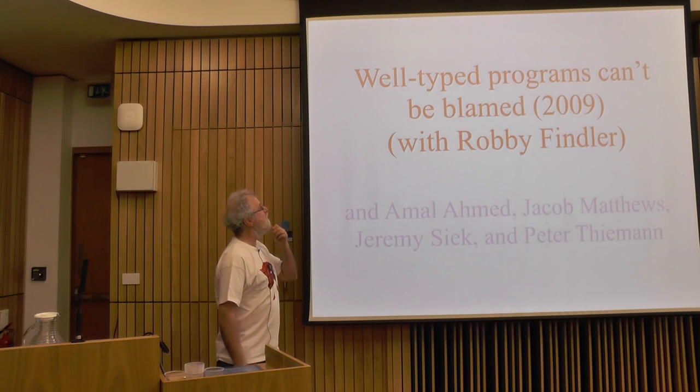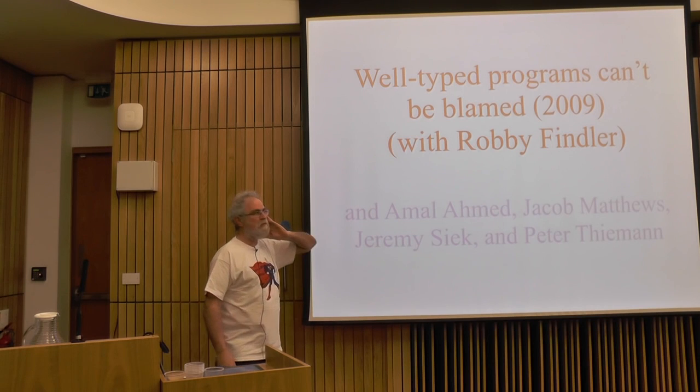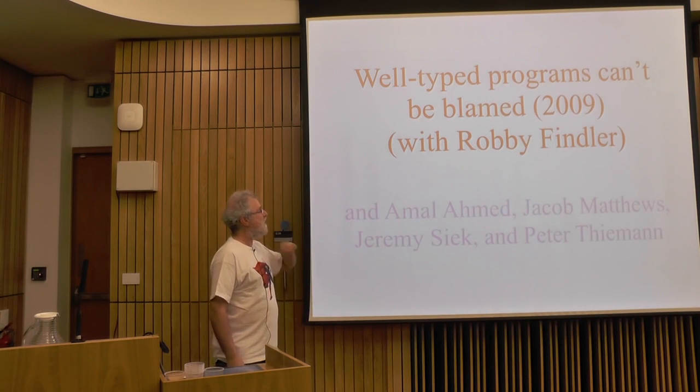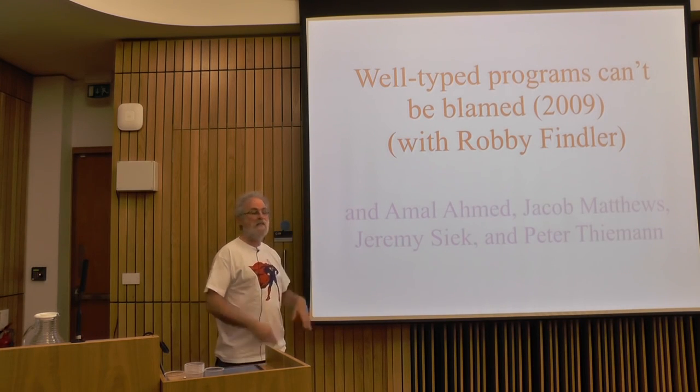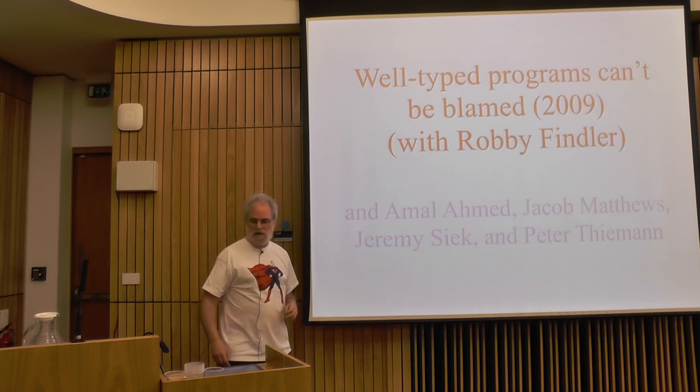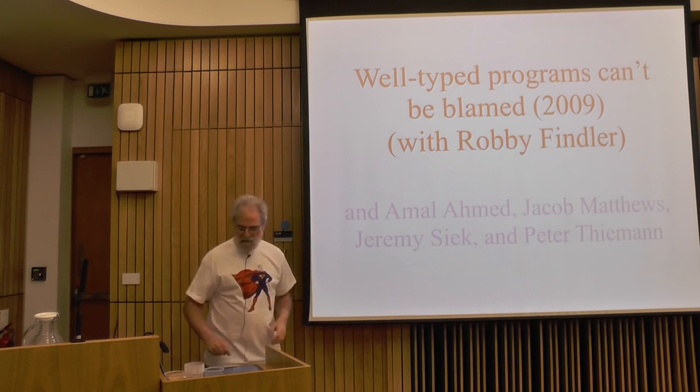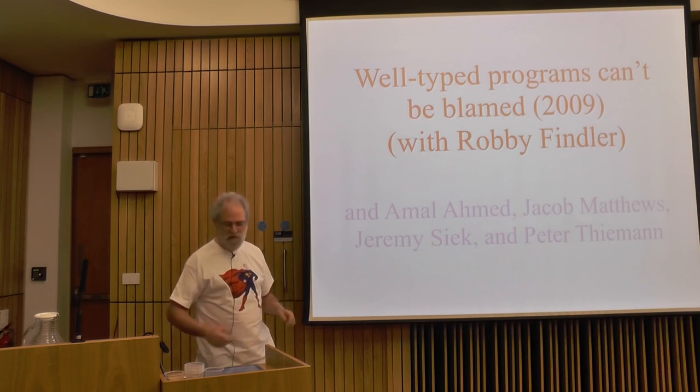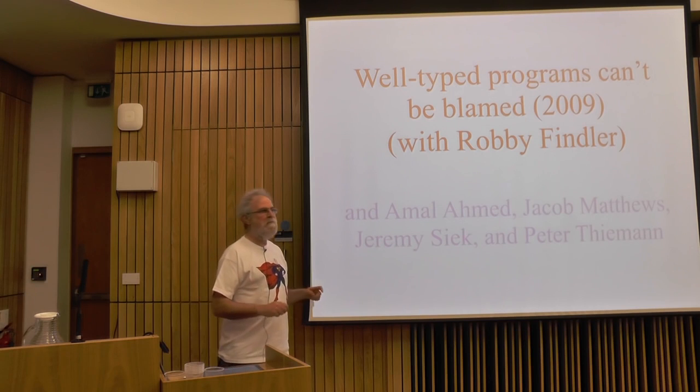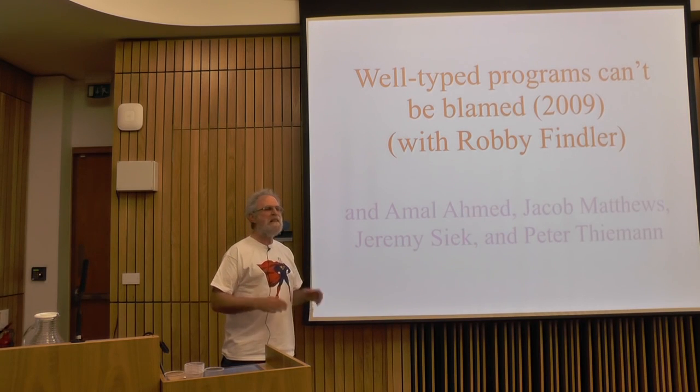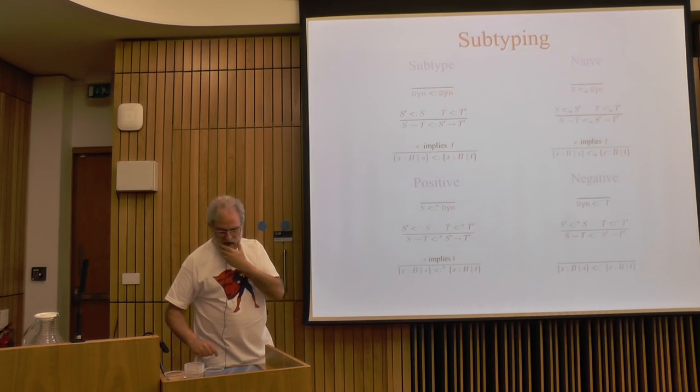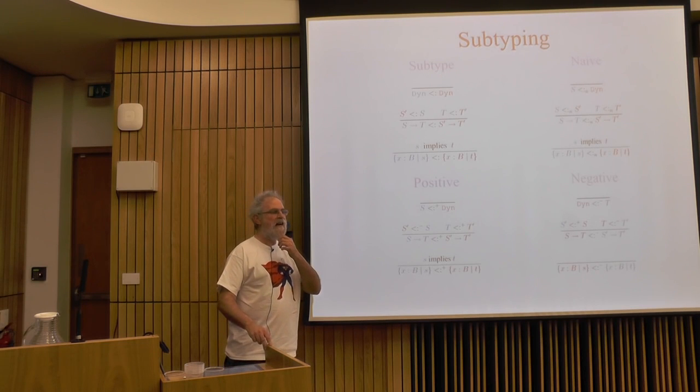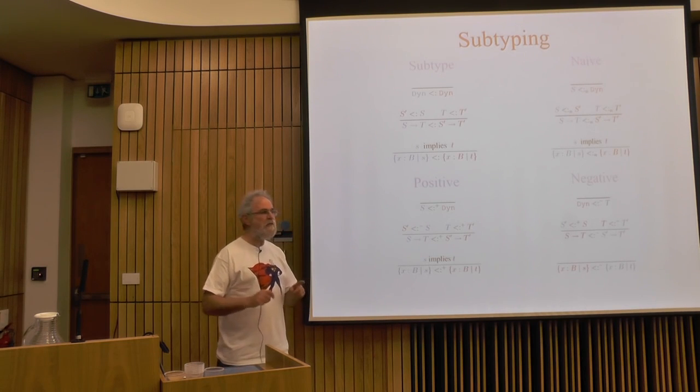The third paper is called Well-Typed Programs Can't Be Blamed, which is what we offered with Robby Findler. This is about gradual typing. I've done a lot of work since with Amal Ahmed, Jacob Matthews, Jeremy Siek, and others, continuing this strand of work. I thought no one's really paid proper attention. It actually has a fair number of citations, which of course I should be pleased with, but basically people read it, cite it, and ignore it. What they're ignoring is the idea of the blame itself.